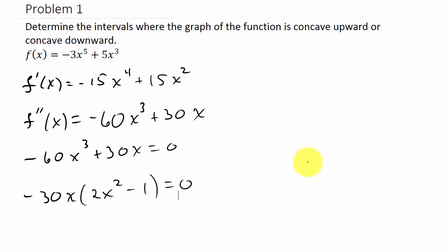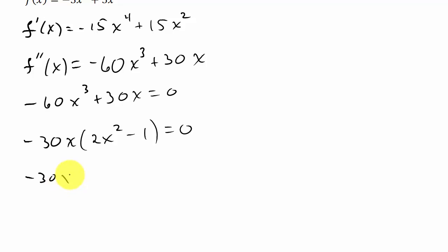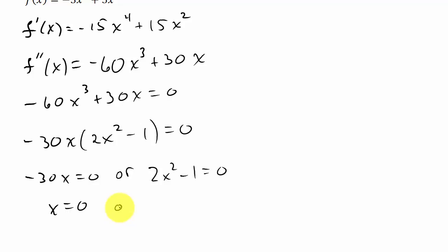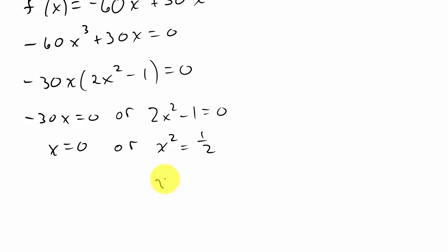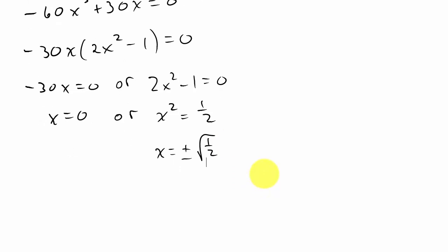So now we have negative 30x equals zero, or 2x squared minus 1 equals zero. From the first factor we get x equals zero. From the second, isolating the x squared term gives x squared equals one half, so x equals plus or minus the square root of one half. We can rationalize the denominator to get x equals plus or minus square root of 2 over 2.